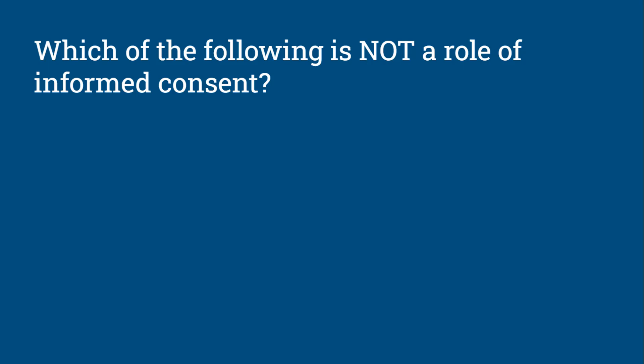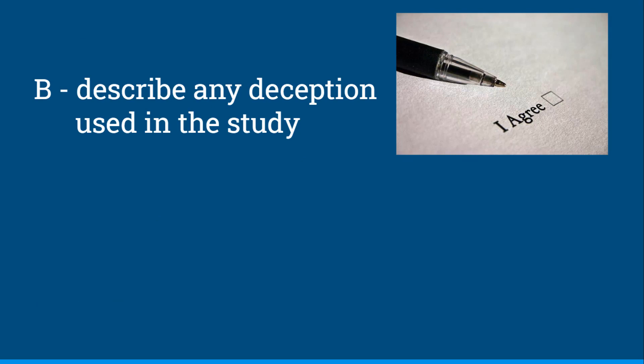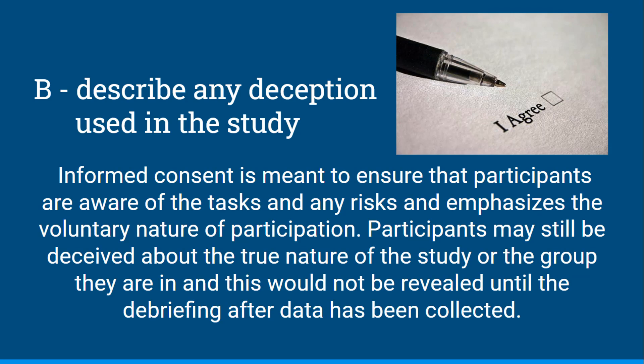Which of the following is not a role of informed consent? Is it to describe any risks of the study, to describe any deception used in the study, to describe the voluntary nature of participation, to acknowledge agreement to participate, or to provide an overview of the tasks involved? The answer is b — to describe any deception used in the study. Informed consent is meant to ensure participants are aware of the tasks, any risks, and the voluntary nature of participation. Participants may still be deceived about the true nature of the study, and this would not be revealed until the debriefing after data has been collected.